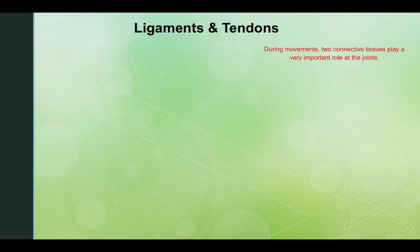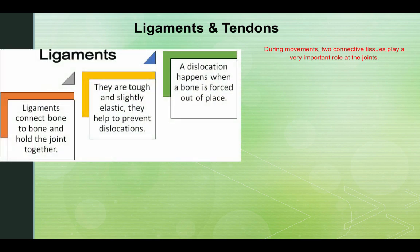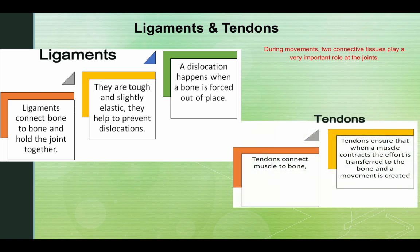Ligaments and tendons. During movement, two connective tissues play a very important role in the joints. Ligaments connect bone to bone and hold the joint together — they are tough and slightly elasticated, and they help to prevent dislocations. A dislocation happens when the bone is forced out of place. Tendons connect muscles to bone. Tendons ensure that when a muscle contracts, the effort is transferred to the bone and movement is created. The tendon allows movement to happen, and the ligaments prevent the movement going too far and dislocating the joint.